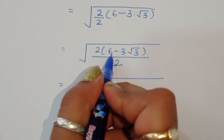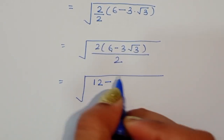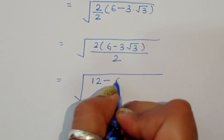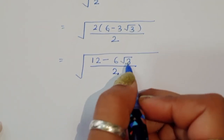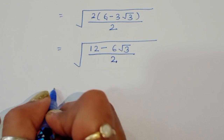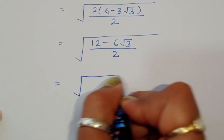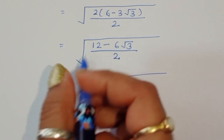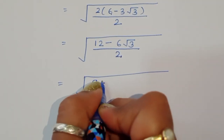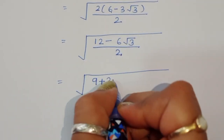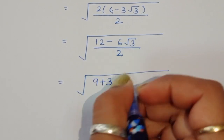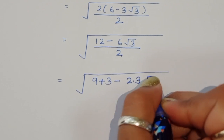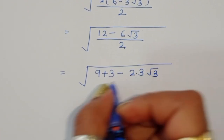Expanding: 2 times 6 is 12, and 2 times 3 is 6, so we get (12 minus 6 square root of 3) divided by 2. Now we rewrite 12 as 9 plus 3, giving us (9 plus 3 minus 6 square root of 3) divided by 2.